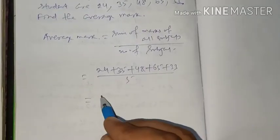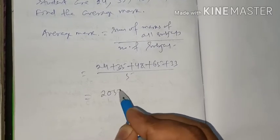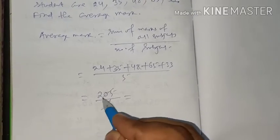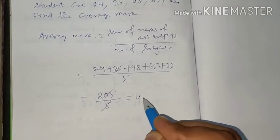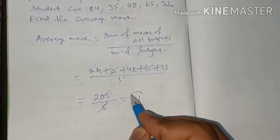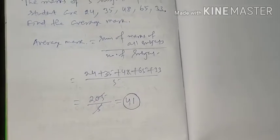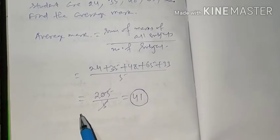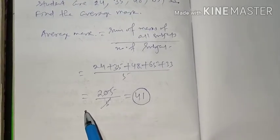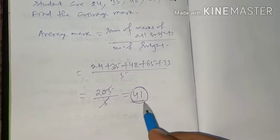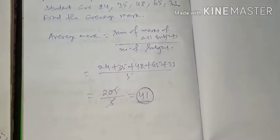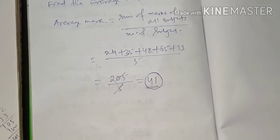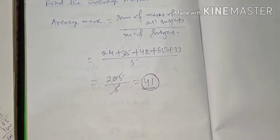Adding all these numbers gives 205 divided by 5. Cancelling, 5 × 4 = 20 and 5 × 1 = 5, so the average mark is 41. The student's average mark is 41. In this way you can find the average mark or percentage of marks.